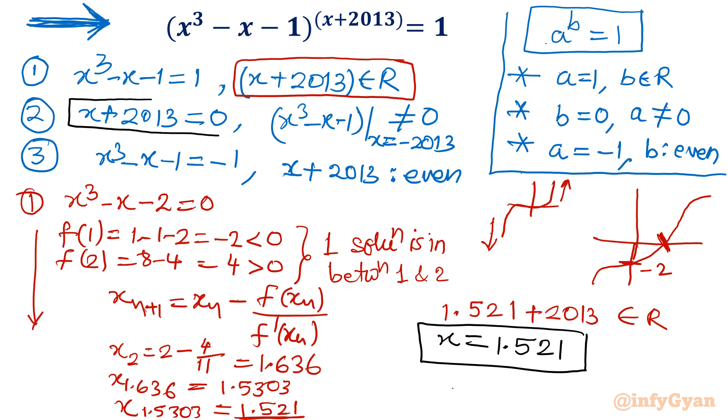Now second, x plus 2013 equals 0. So from here, x is equal to minus 2013. If I will put x is equal to minus 2013 in cubic equation, it won't be 0. Will it be minus 2013 whole cube minus of minus 2013 minus 1? Is this equal to 0? Never possible. Because that cube, 2000 cube would be very big number and you are adding 2013. So there would be some very big number. It is not 0. So this solution is also accepted. So now x is equal to 1.521 and x is equal to minus 2013 are solutions.